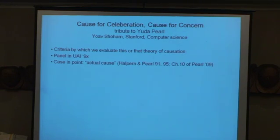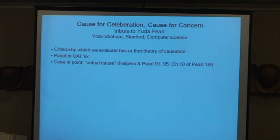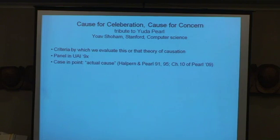Actual cause — this is 'the lightning yesterday caused rain,' as opposed to 'lightning caused rain' in general. I'm not actually going to speak about that theory itself. There were papers: an initial one in the year '91, then a version in the proceedings of the British Royal Academy, and it's really the basis of chapter 10 of Yuda's causality book. What I do want to speak about is how they argue on behalf of the theory.